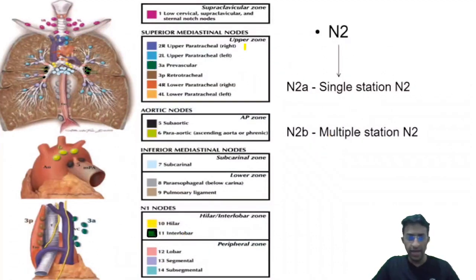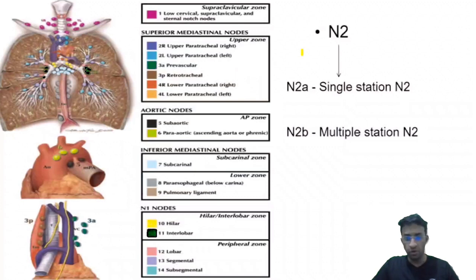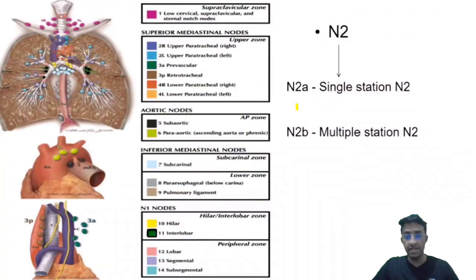N2 nodes are metastasis in lymph nodes including stations 2, 3, 4, 5, 6, 7, 8, and 9. If it involves a single station, it is N2A; if it involves multiple stations, it is N2B. Level 1 nodes are N3 lymph nodes.